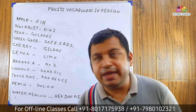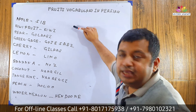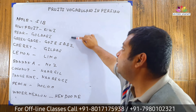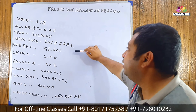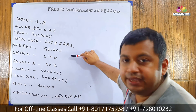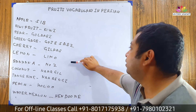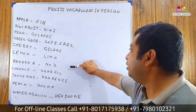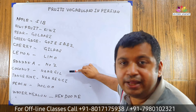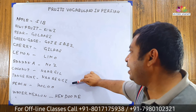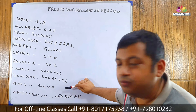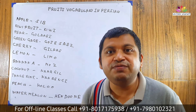Now let's repeat it all again. Apple: Seeb. Kiwi fruit: Kiwi. Pear: Golabi. Greengage: Gojeh Sabz. Cherry: Gilas. Lemon: Limon. Banana: Mooz. Coconut: Nargil. Tangerine: Narengi. Peach: Holu. Watermelon: Hendooneh.